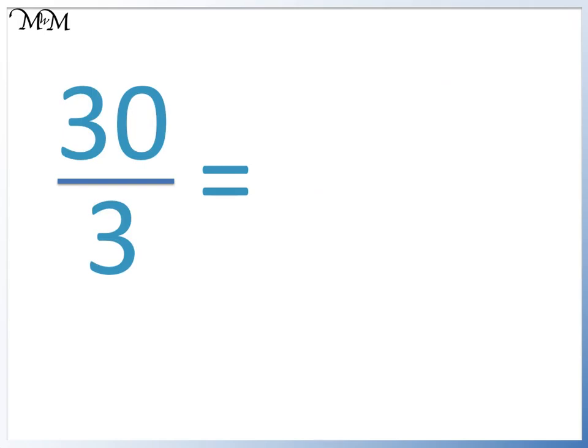Finally, we have 30 out of 3. How many times does 3 go into 30? 3 times 10 equals 30. And because it goes into 30 exactly 10 times, our answer is just 10.